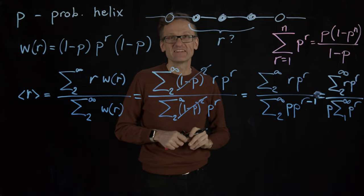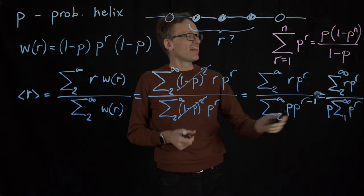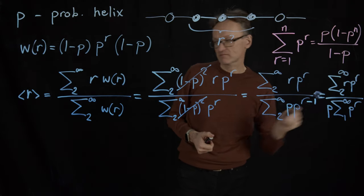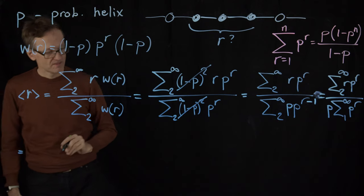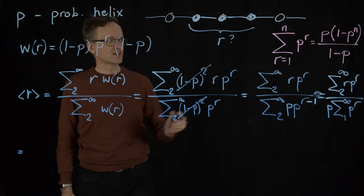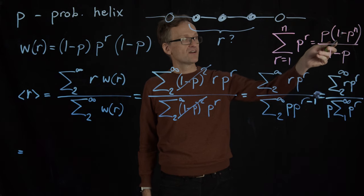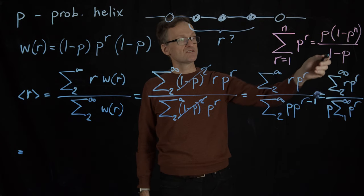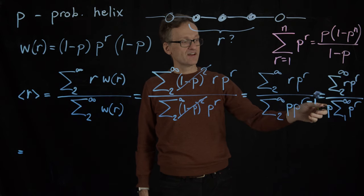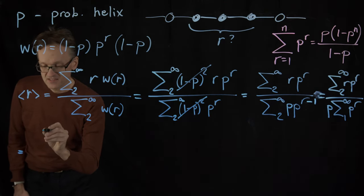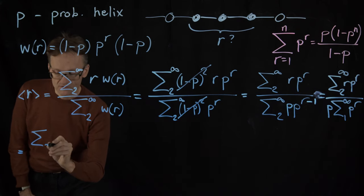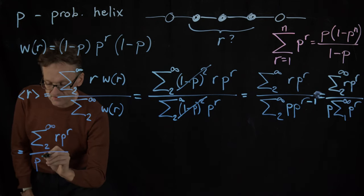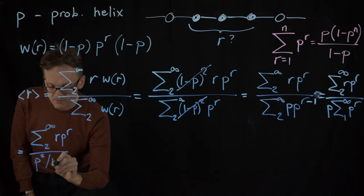That sum now corresponds to the expression here if I put n equals infinity. And that means that that becomes p multiplied by, well, one minus p. If p is smaller than one and I raise it to infinity, it's going to disappear. So I just get p here divided by one minus p. And then I had an extra p there. So I still have that sum from two to infinity of r multiplied by p raised to the power of r divided by p squared divided by one minus p.